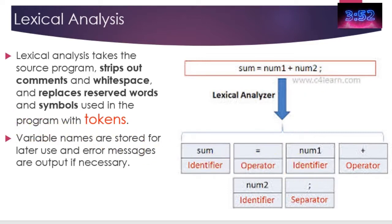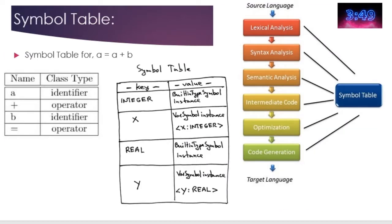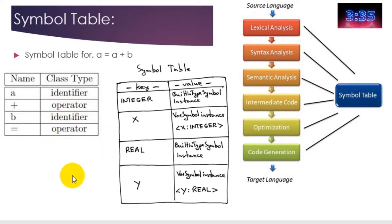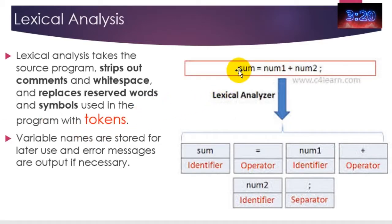It converts those into tokens and passes them on to the syntax analysis. But before it does that, it produces something called a symbol table. For this bit of code — 'a = a + b' — 'a' is an identifier, '+' is the operator, 'b' is the identifier, '=' is the operator. It does this for every single line of code, so you can imagine it becomes a very large symbol table. You might want to use something like a hashing algorithm to help you keep track of them. Our code has been taken and turned into all of these lines.